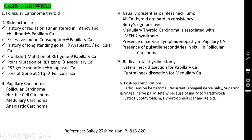Other complications include recurrent laryngeal nerve palsy: unilateral injury causes hoarseness of voice; bilateral injury causes acute respiratory distress requiring tracheostomy. Superior laryngeal nerve palsy causes huskiness of voice — the patient cannot produce high-pitched sounds. The patient may develop tetany due to injury to the parathyroid glands. Late complication: hypothyroidism, managed with lifelong thyroid replacement therapy. Patient may also develop hypertrophic scar or keloid.